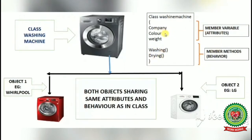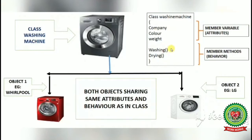The class washing machine has some attributes: company, color, and weight, and two methods: washing and drying. Attributes are also called characteristics and member variables, and behaviors are also called member methods. Both washing machines share the same attributes and behaviors defined in the main class.